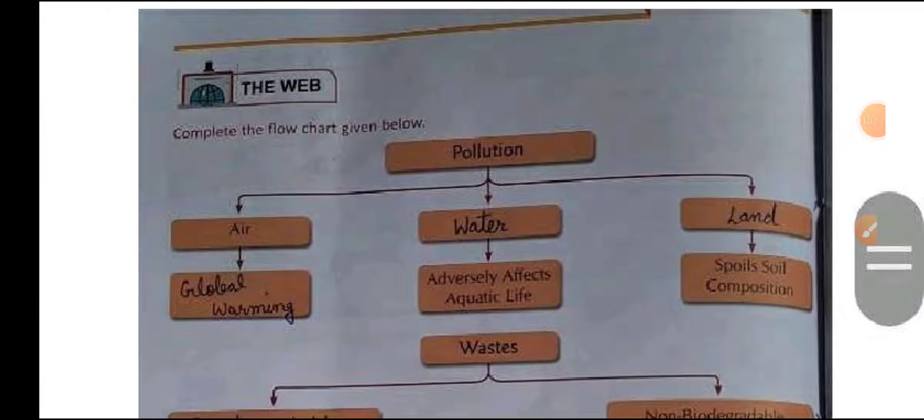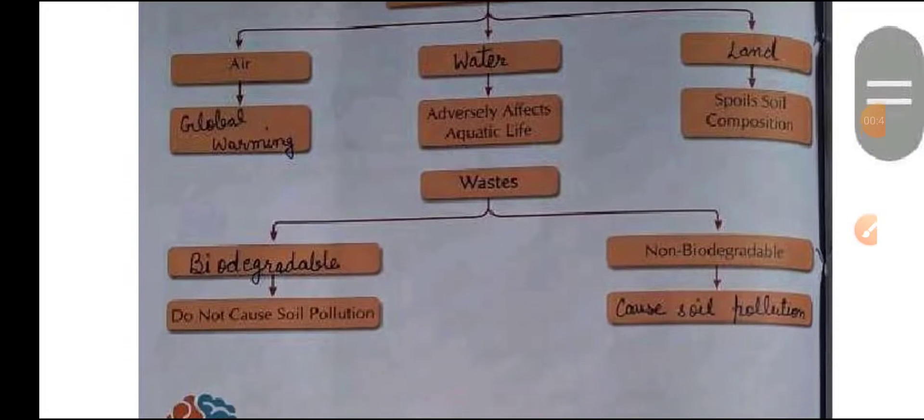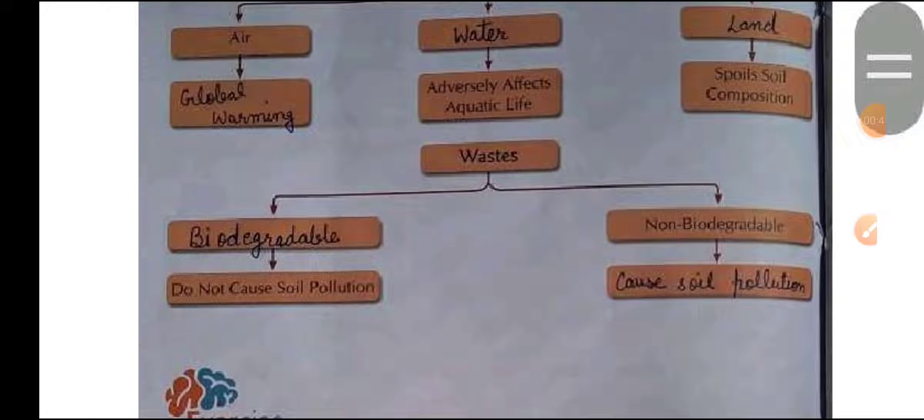First question is complete the flow chart given below. Pollution has three parts: air, water, and land. Air causes global warming. Water pollution is caused by adversely affecting aquatic life. Land spoils soil composition. Next, waste: biodegradable and non-biodegradable. Biodegradable does not cause soil pollution and non-biodegradable causes soil pollution.